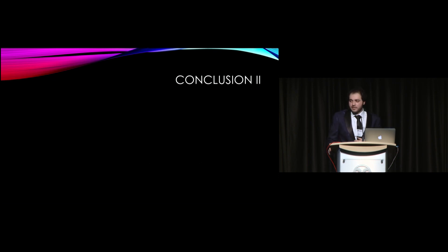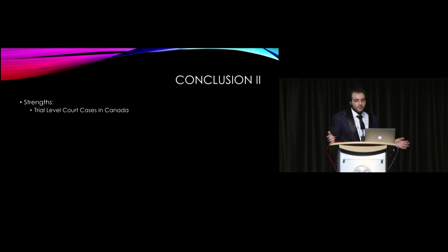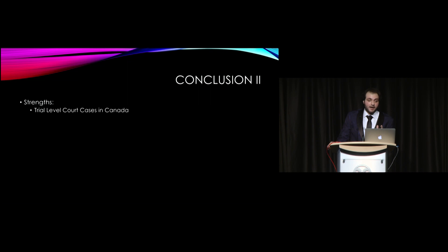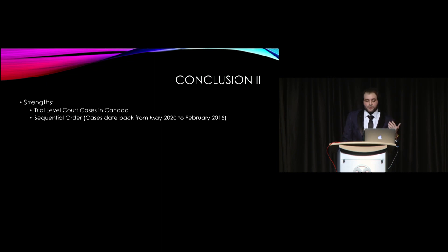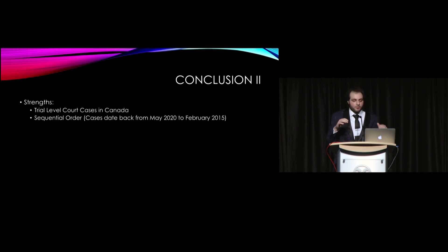Some strengths of this study: first, these are trial-level court cases in Canada — everyday-level cases. The fact that I had to go through up to 1,500 court cases to find just 200 qualifying cases shows how relatively rare this phenomenon is. Second, cases were selected sequentially — starting from the earliest point in the database — going from May 2020 back to February 2015. This approach avoided duplicate cases, since some court cases return to court multiple times; we looked at the earliest ruling.